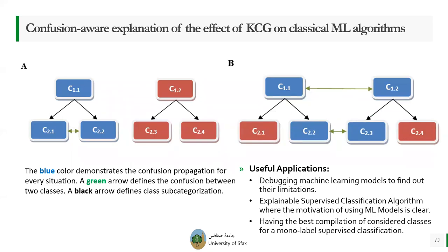What explains the results, according to our work, is something called the confusion-aware explanation of the effect of knowledge-driven class generalization. In scenario A, when two categories are confused together and their direct parent category is the same, the confusion will be restricted, and then the generalization will increase the accuracy rate. In scenario B, when two confused classes have two different direct parents, the confusion will be generalized, and class generalization will decrease the accuracy rates.